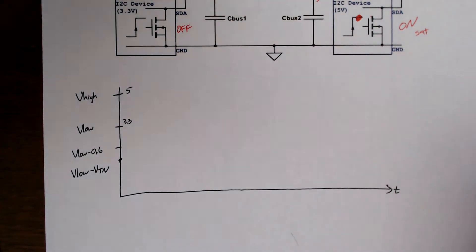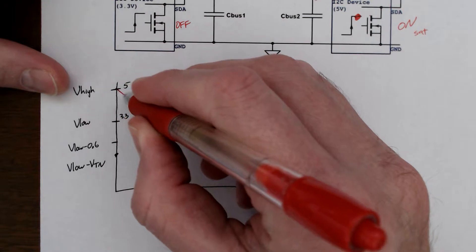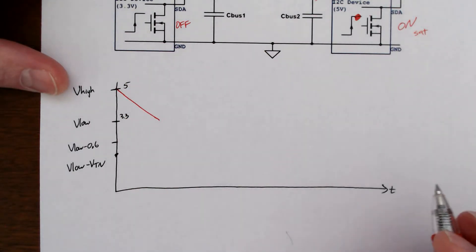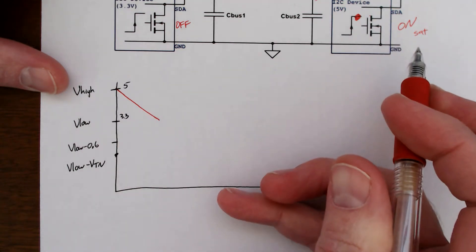So because this is saturation mode, our circuit is going to go down like this. And it's a constant because we're discharging a capacitor at a constant rate, which is saturation mode, constant current.